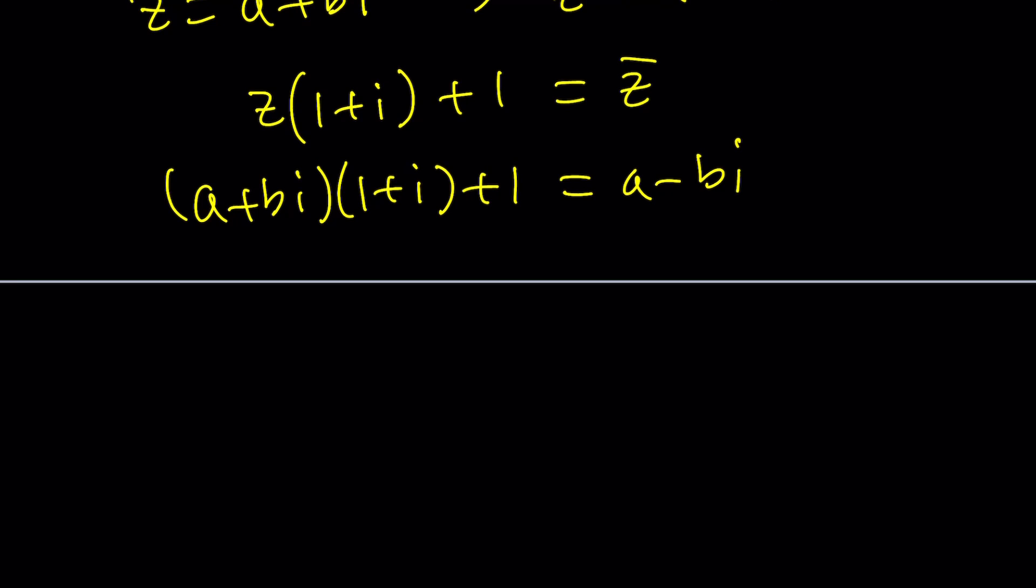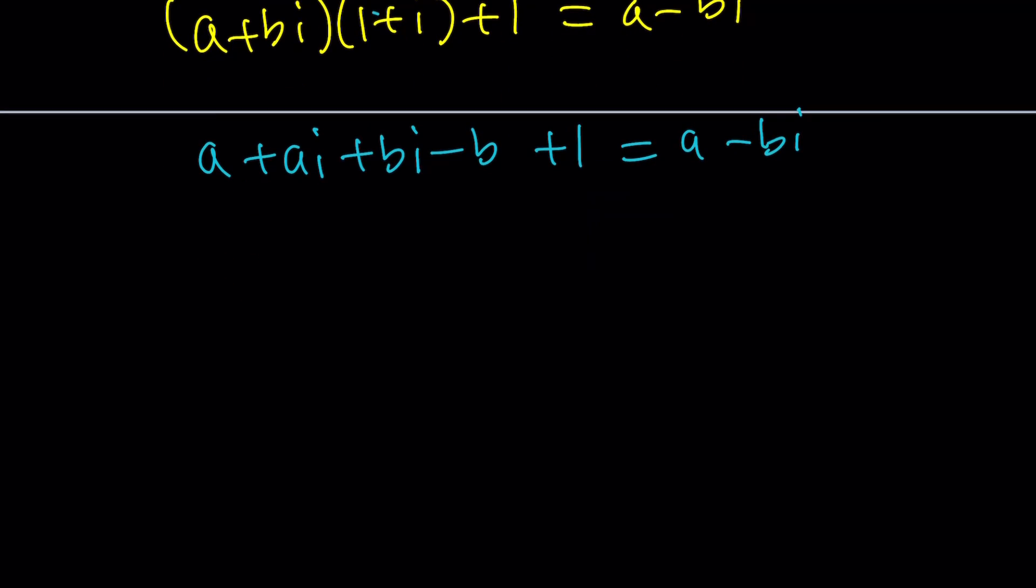Again, this single equation is going to give us two equations. Why? Because we're dealing with something awesome called complex numbers. All right. So let's go ahead and distribute. A plus ai plus bi plus b i squared, which is minus b plus one equals a minus bi. Let's go ahead and put together the real parts on the left. A minus b plus one plus a plus b. I didn't have to use parentheses. I just wanted to emphasize the fact that real parts and imaginary parts are separated. All righty.